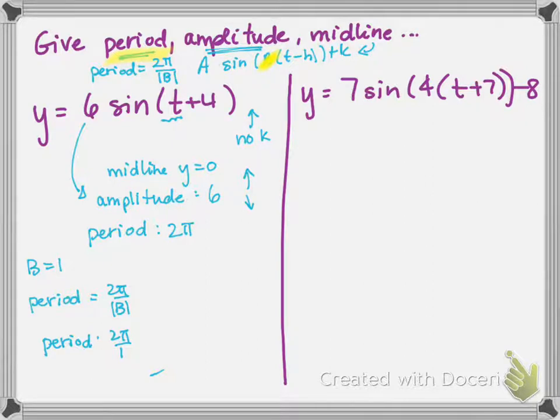For the second one, we have a little bit more complicated of an equation, but it just has some more numbers in it. So we'll start with midline. And again, that comes from the number on the outside. The fact that negative 8 appears as a vertical shift down makes our midline at negative 8. So the graph's been shifted down 8 units in the vertical manner.